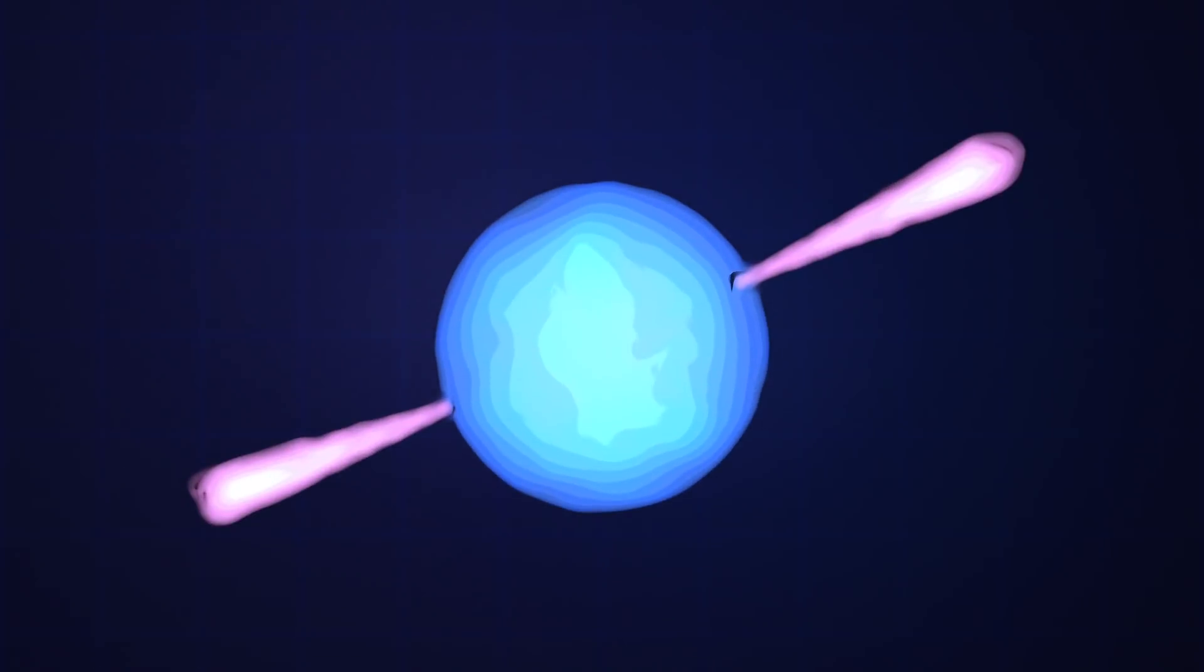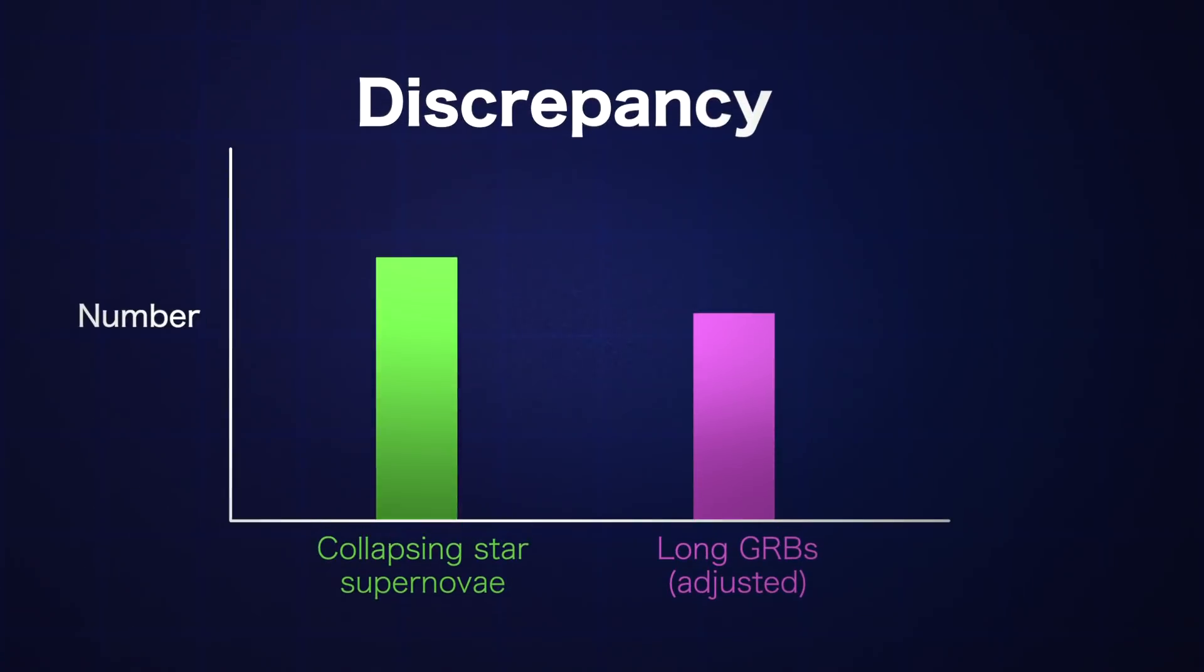We only detect GRBs when the jets aim in our direction. Even accounting for this, long GRBs still occur at a lower rate than the supernova type associated with them.